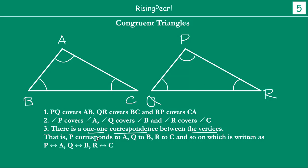Angle P will cover angle A, angle Q will cover angle B, and angle R will cover angle C. So we say P corresponds to A, Q corresponds to B, and R corresponds to C. This is strictly for you to understand that when two triangles are congruent, the corresponding vertices cover each other, the corresponding sides cover each other, and the corresponding angles are equal. If this happens, then we say the two triangles are congruent.